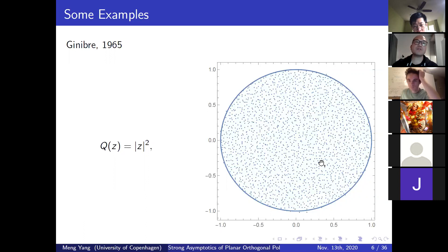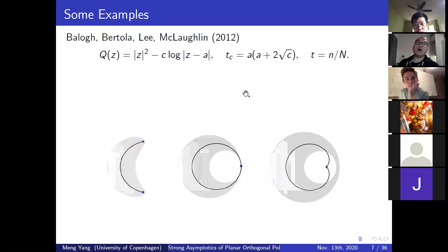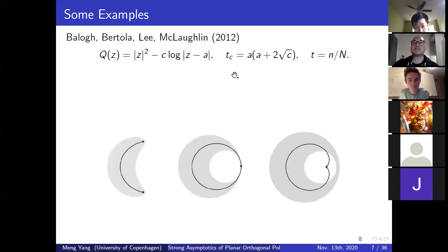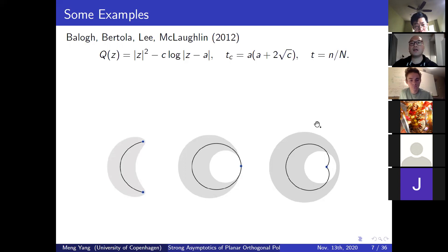In 2012, Balogh, Bertola, Lee, and McLaughlin studied the case of Gaussian weight with one logarithmic singularity at A. Here T_c is the critical point and T is the ratio between small n and capital N. If T is less than T_c, that is the pre-critical case; if T equals T_c, that is the critical case; and the last stage is the post-critical case. They studied the strong asymptotics of the orthogonal polynomials for all three cases.